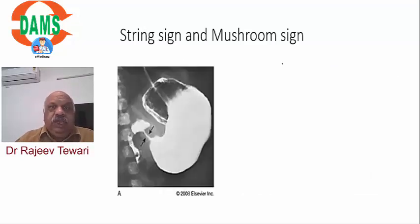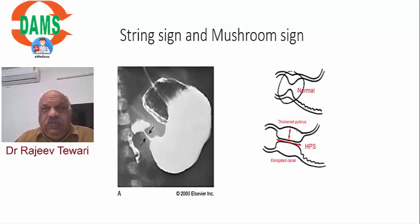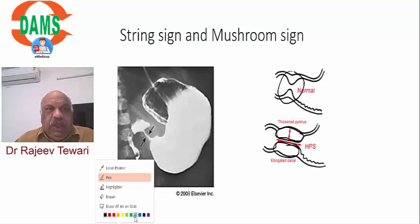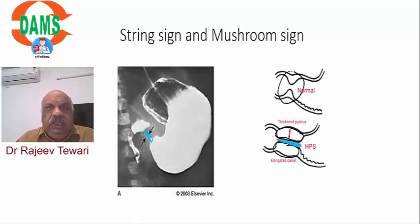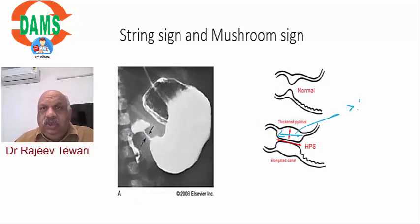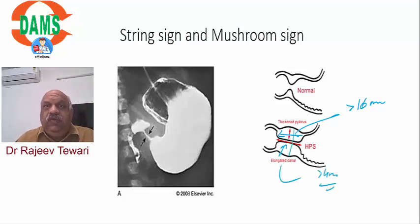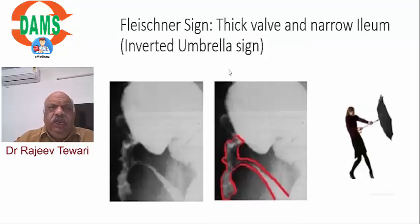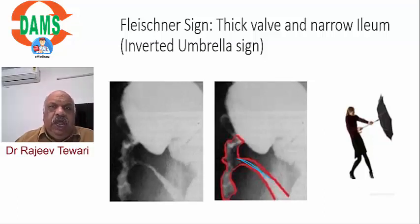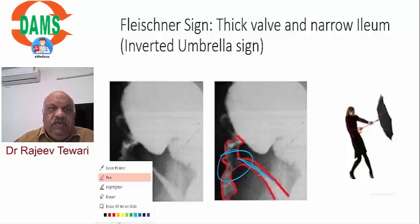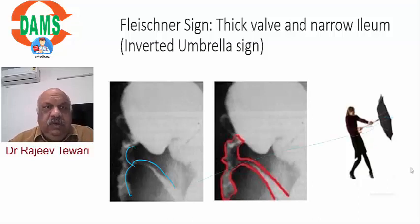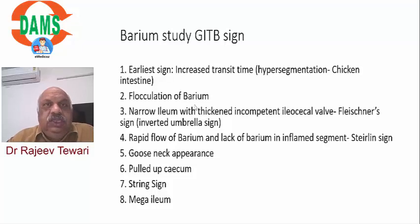String sign in hypertrophic pyloric stenosis (HPS): the normal pylorus gets hypertrophied and thickened, so the pyloric canal gets stretched giving a string sign, and the duodenal bulb makes it a mushroom sign. These are two signs of HPS. On ultrasound, length of pylorus more than 16 mm and thickness more than 4 mm is suggestive of HPS. The Frischioni sign is due to narrowing of the terminal ileum and thickened ileocecal valve giving an inverted umbrella sign.